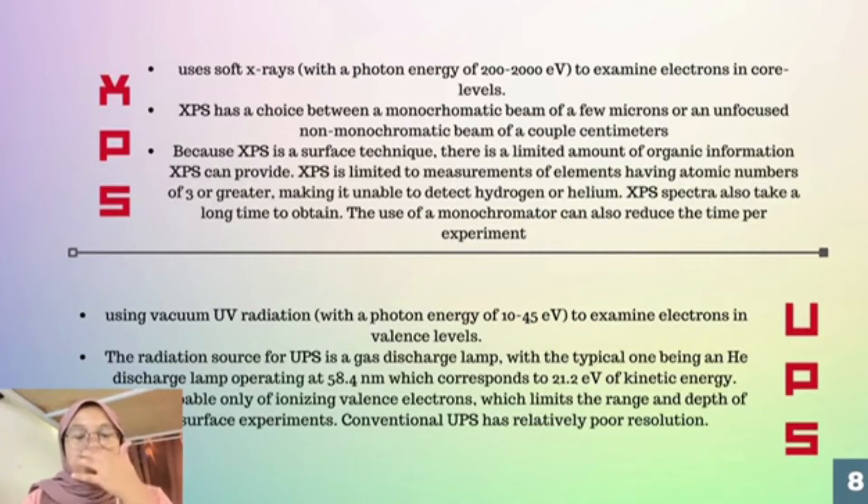Because XPS is a surface technique, there is a limited amount of organic information that XPS can provide. XPS is limited to measurement of elements having atomic numbers of 3 or greater, making it unable to detect hydrogen or helium. XPS spectra also take a long time to obtain. The use of a monochromator can also reduce the time per experiment.